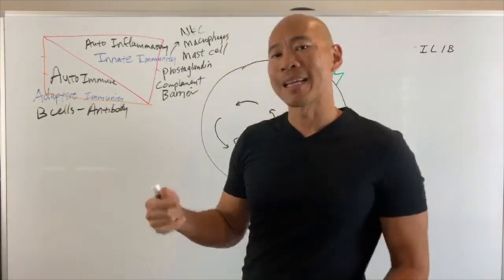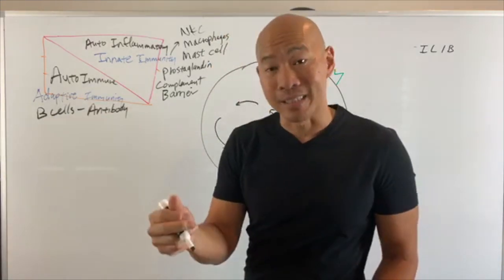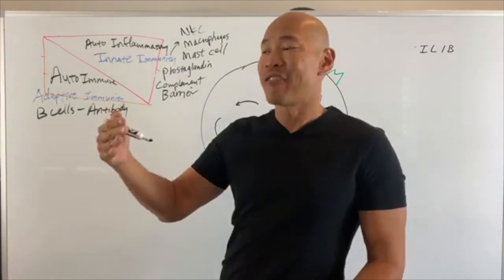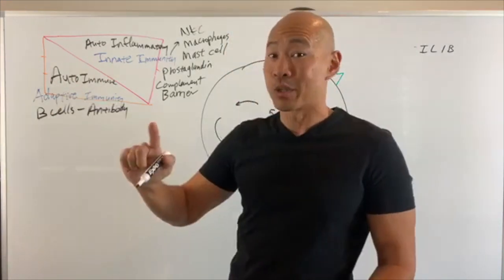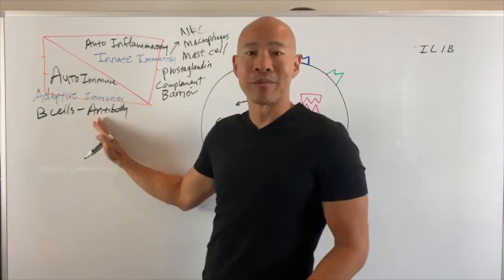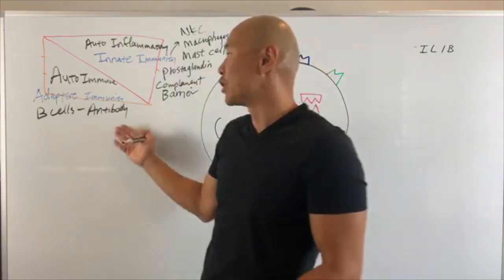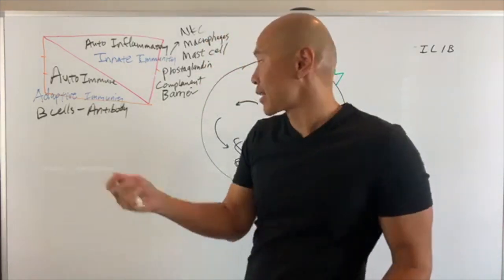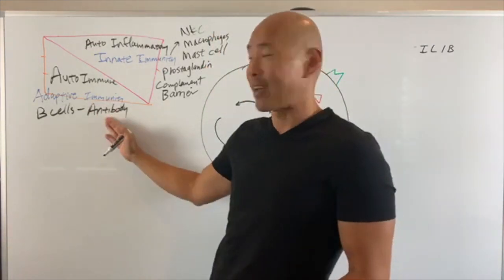When your body gets an infection, B cells make antibodies — a memory system to tag the bad guy. So it remembers: I had to fight this virus, so I'll remember it. The next time it comes through the door, I can eliminate it before it becomes a problem. That's the basis of vaccination — they inject you with a live attenuated or dead virus so your body develops an antibody response against that viral protein.